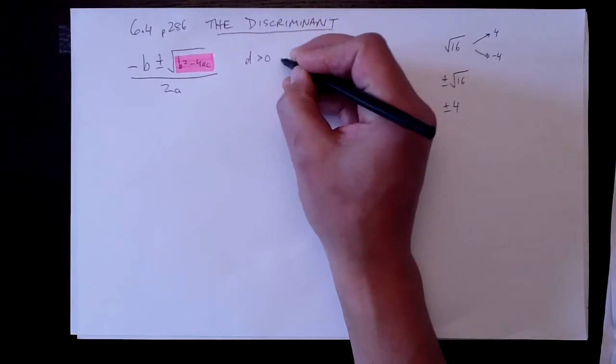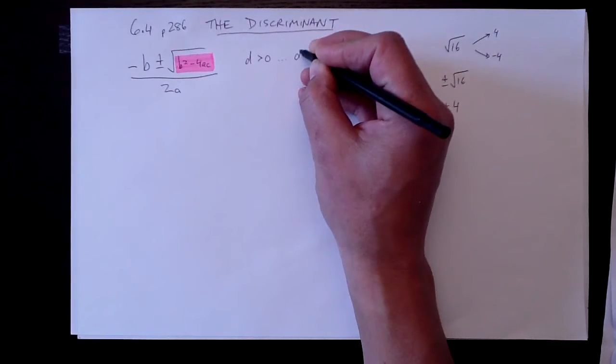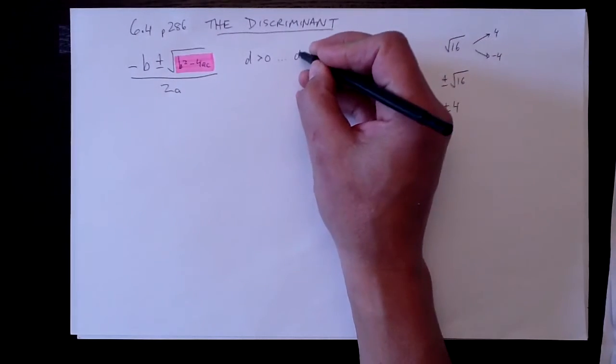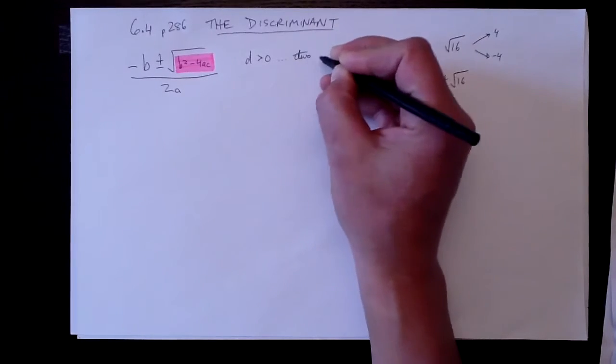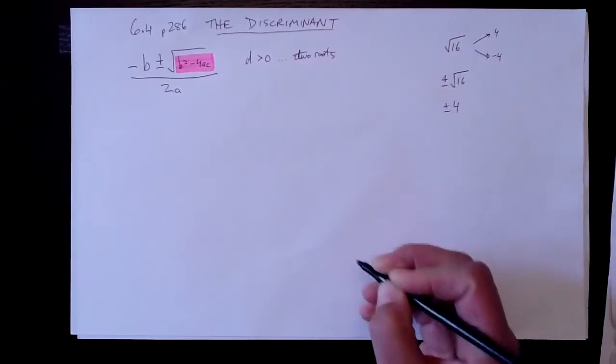If it's greater than zero, there are two roots. What is that? Two roots. There we go. Good save.